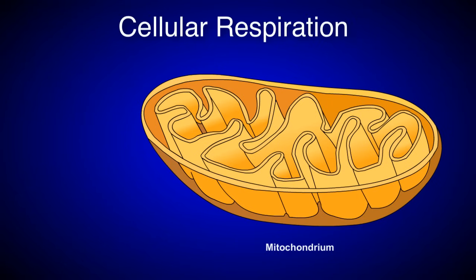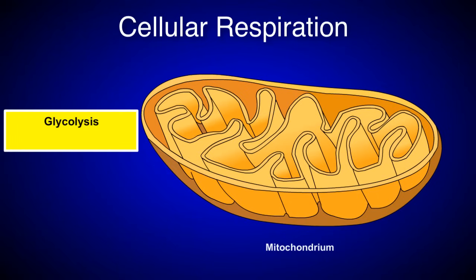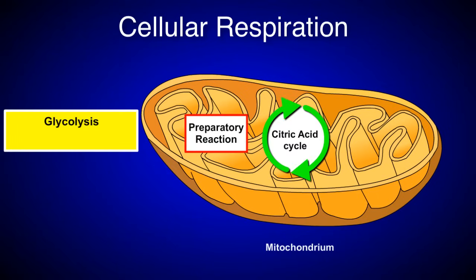Cellular respiration consists of four primary stages. These are glycolysis, the preparatory reaction, the citric acid cycle, and the electron transport chain.